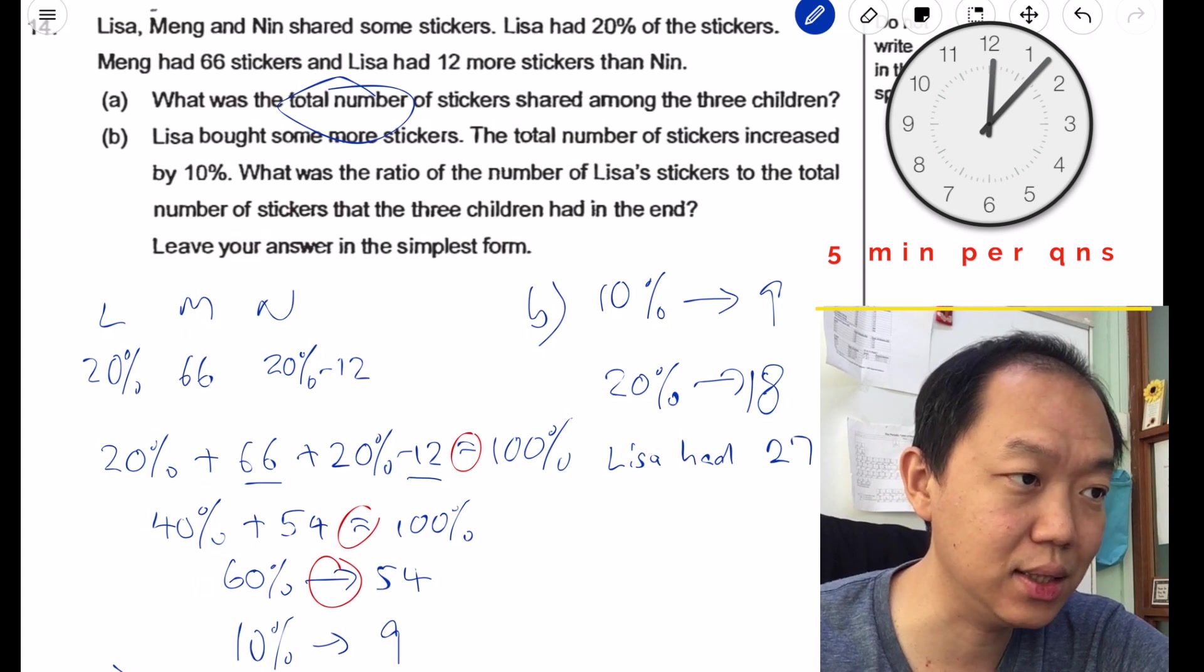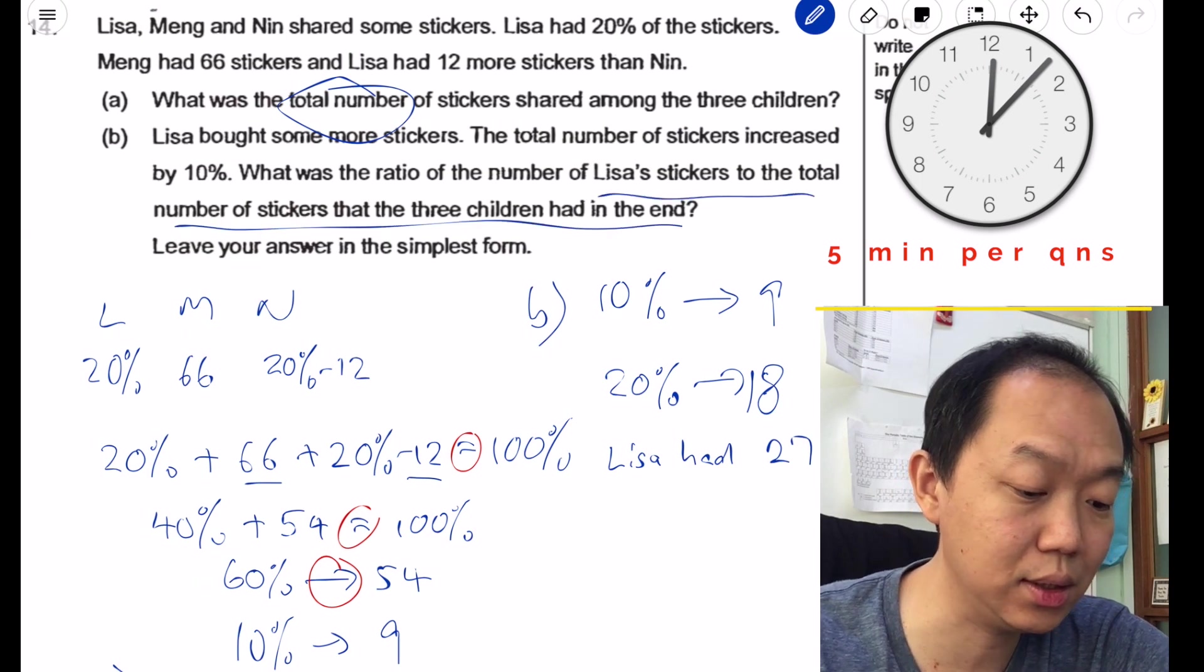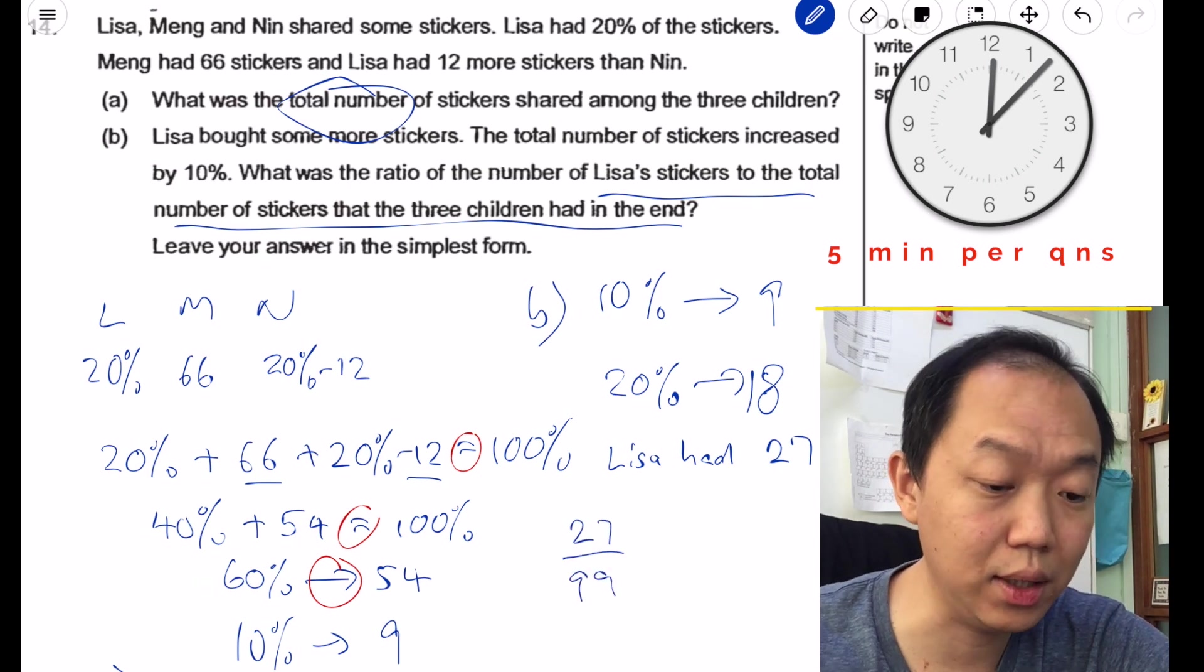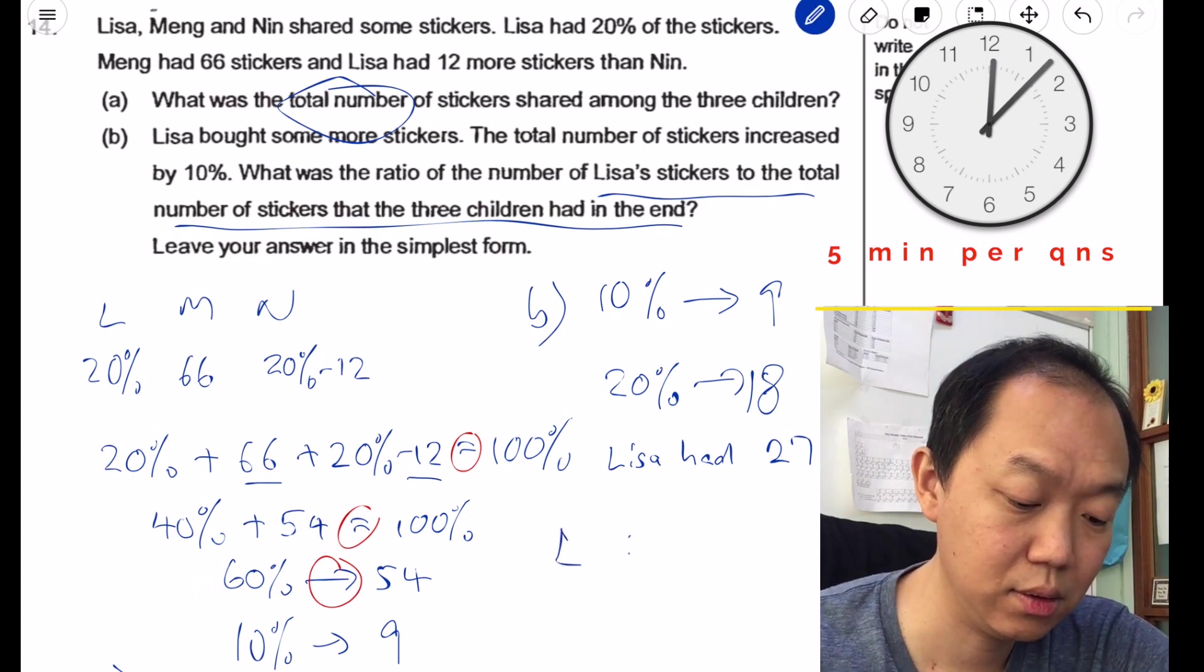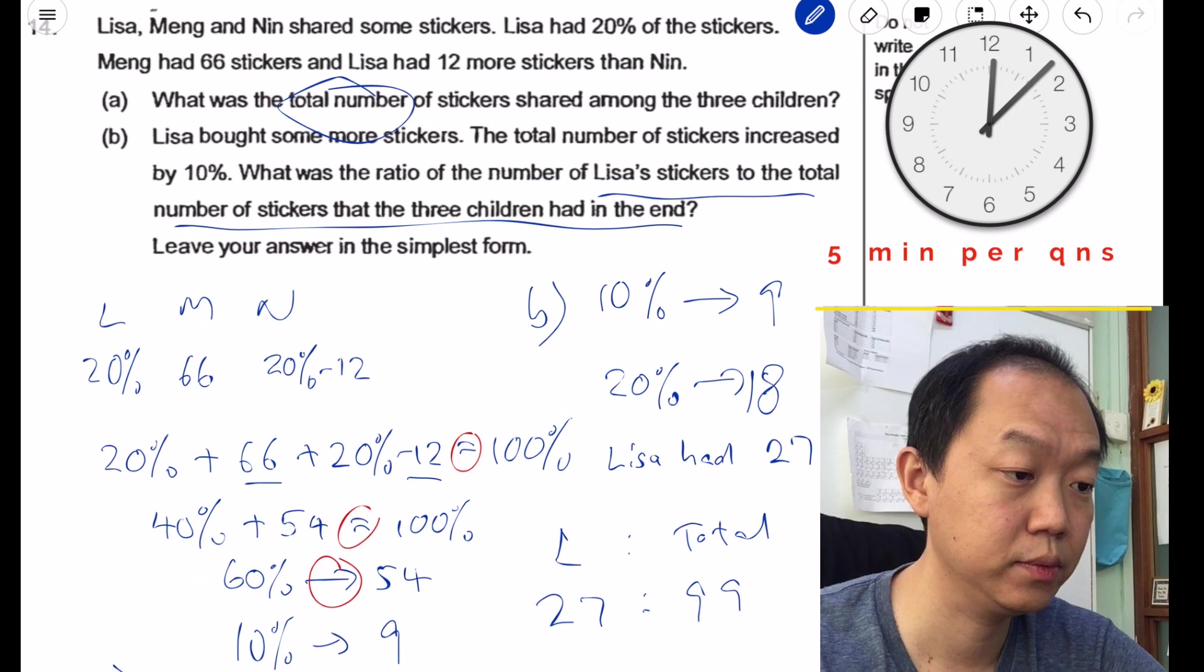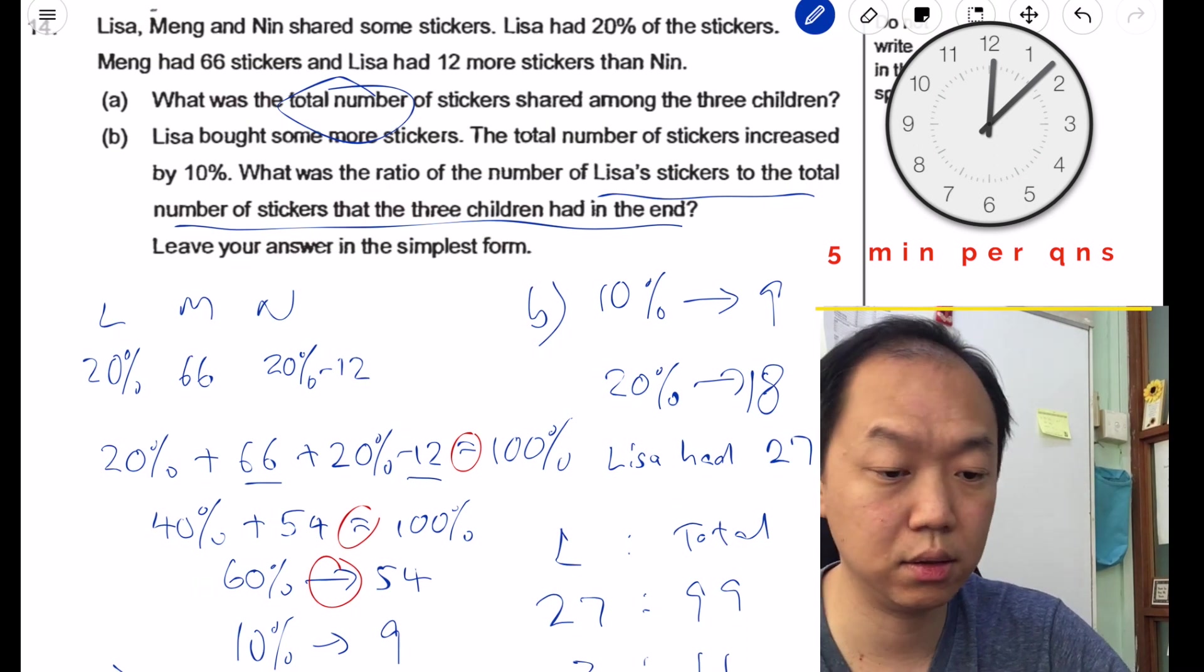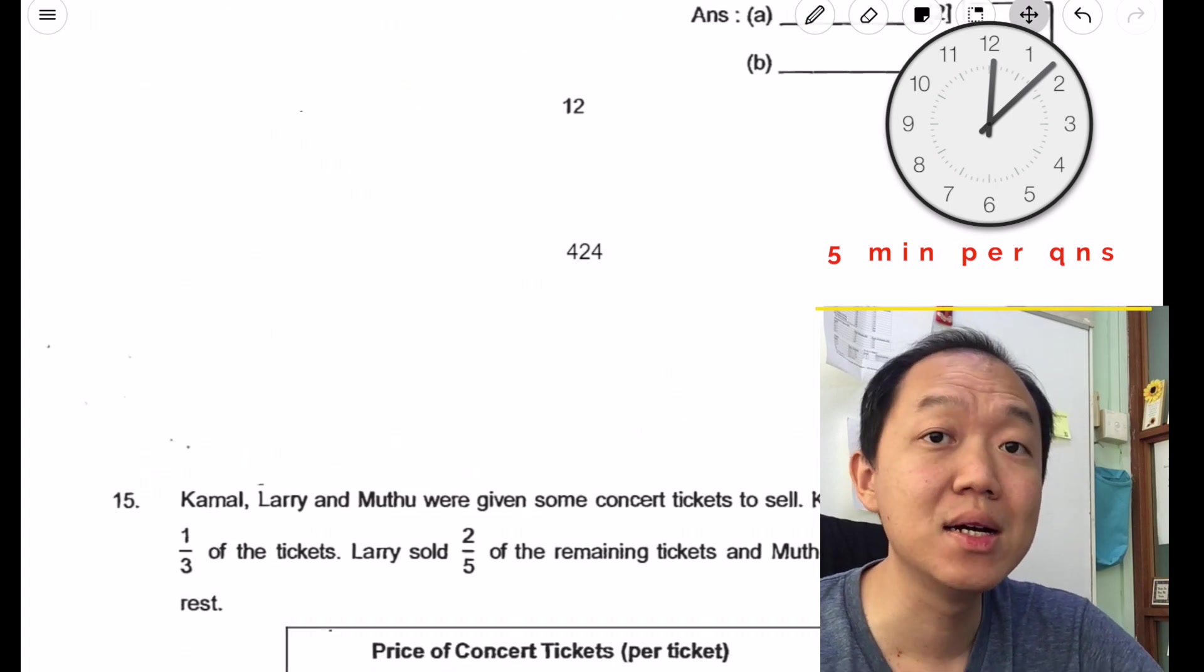Now if there are 27 stickers at the end, you want Lisa's to the total number of stickers at the end, so 99. So 27 out of 99, oh sorry, the ratio. Ratio: Lisa versus total. This is 27 is to 99, and you want to find the simplest form: 3 is to 11. That's it. 3 is to 11, that's my answer. So far so good. This is from CHIJ.